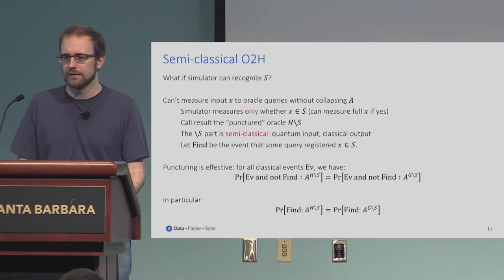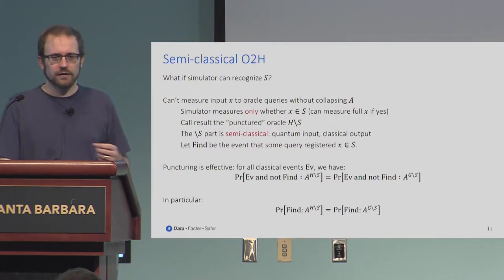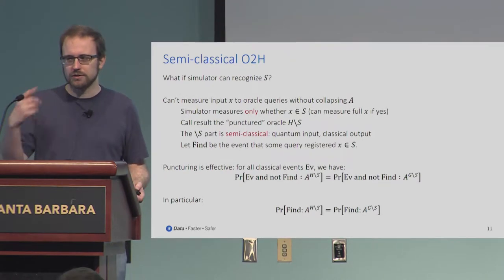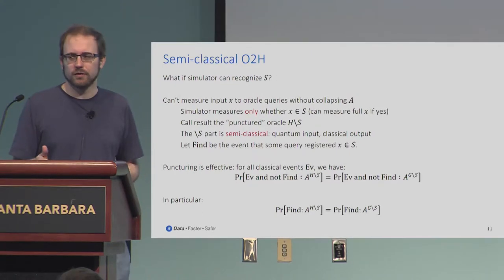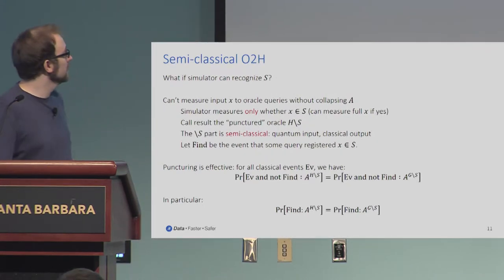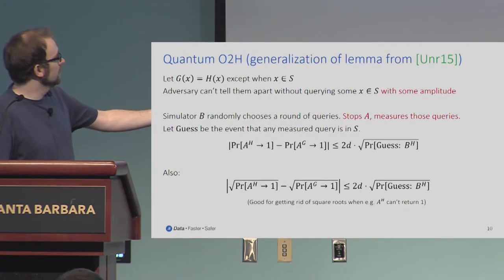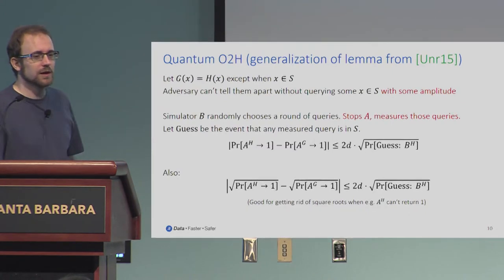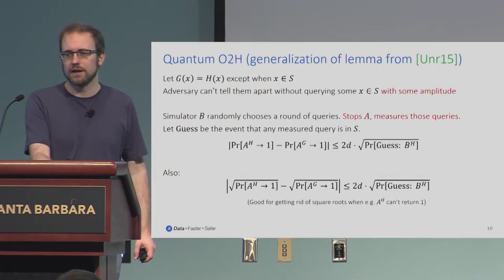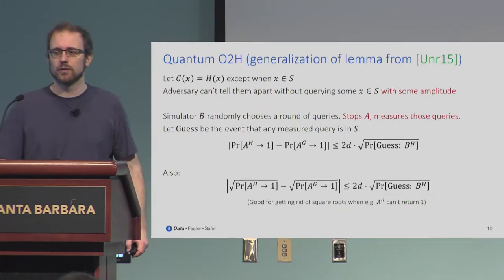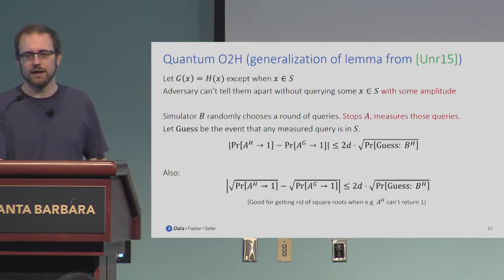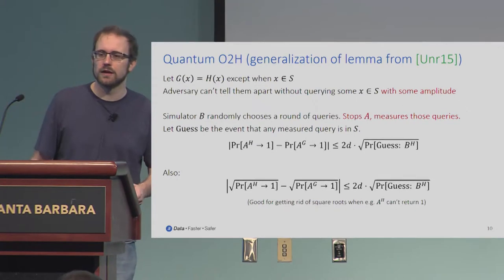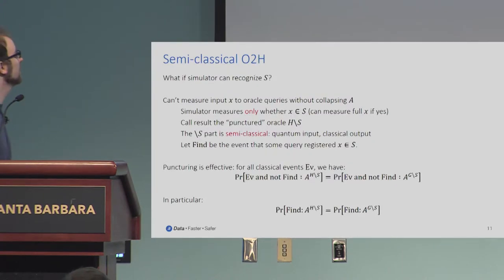It's called a punctured oracle because as long as the adversary makes queries that are measured not to be in the set, his behavior doesn't depend on the value of the oracle there. So it effectively removes those inputs from the domain of the random oracle. It also follows, interestingly, that whereas before we had a bound with 'guess given B talking to H,' it's obviously also true with B talking to G, but those bounds are not actually the same. In one case the adversary finds a thing and keeps querying it over and over again. But here, the finding probability is actually the same on both sides.